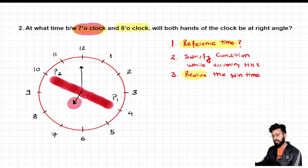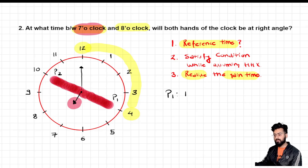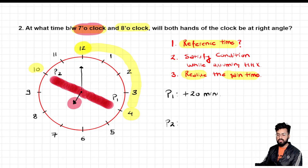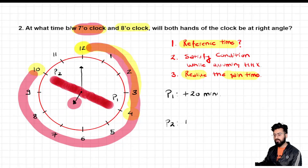Now I calculate the gain times. For position 1, the minute hand moves from 12 to 4 — that is 4 gaps, and 4 gaps equals 20 minutes. So the gain time for position 1 is 20 minutes. For position 2, the minute hand moves from 12 to 10 — that is 10 gaps, and 10 gaps equals 50 minutes. Once I have these two gain times, answering the question will not take much time.